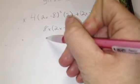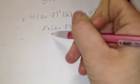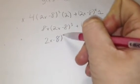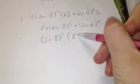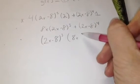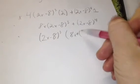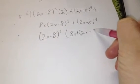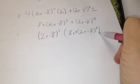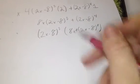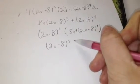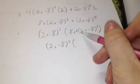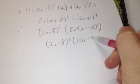Now you can factor out 2x minus 8 raised to the third power. That gives you 2x minus 8 raised to the third power, multiplied by 8x plus 2x minus 8 to the first power, which simplifies to 2x minus 8 raised to the third power, all multiplied by 10x minus 8.